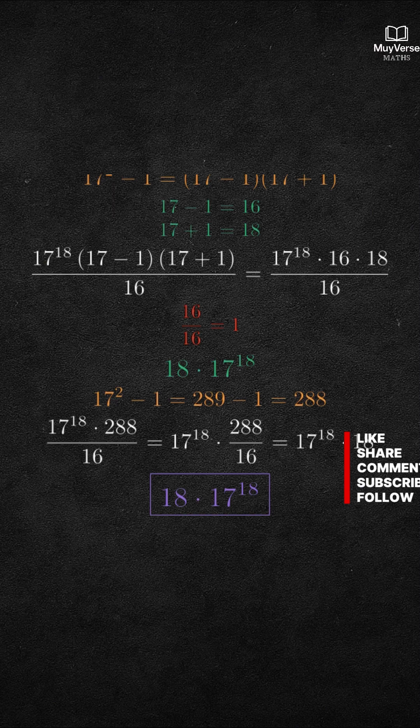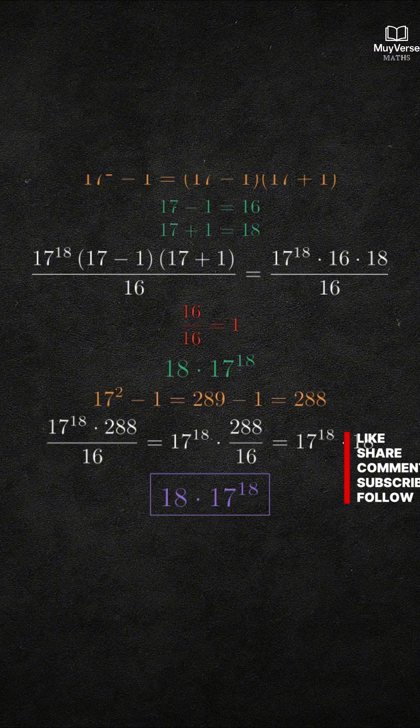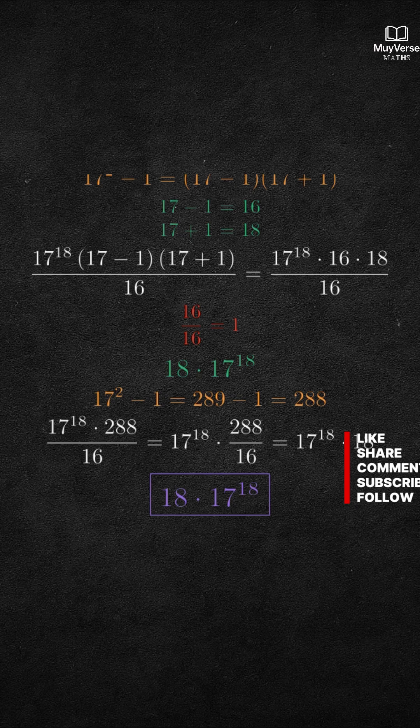Summary. Factor out the smallest power. Use the difference of squares to spot 16 times 18. Cancel 16 with the denominator. And the result is 18 times 17 to the 18th power.